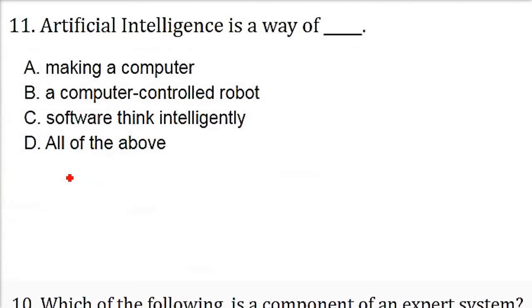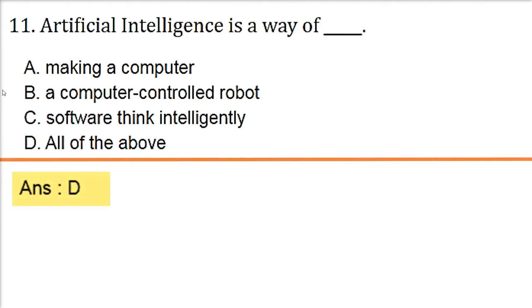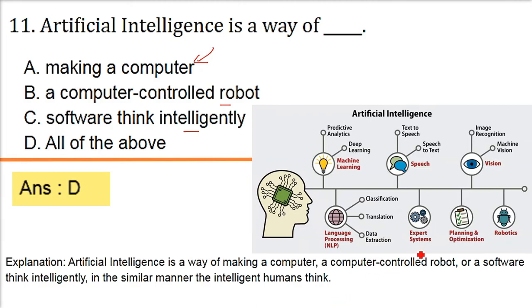Artificial intelligence is a way of, see, it's basically making a machine intelligent. So making a computer also falls in this category. A computer controlled robot is also there. Software thinks intelligently because it is all about the pattern recognition and you have different kind of work that can be done by a human being that should be done by a machine. The answer is D, making a computer, a computer controlled robot, software thinks intelligently, all of the above. Because what we can do, machine should do. What we can make, machine should make.